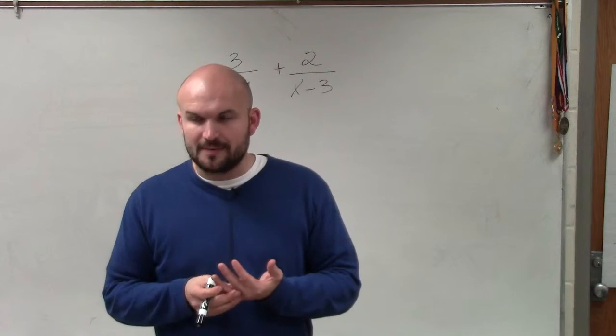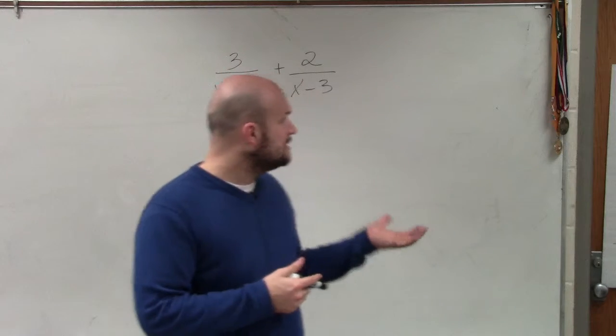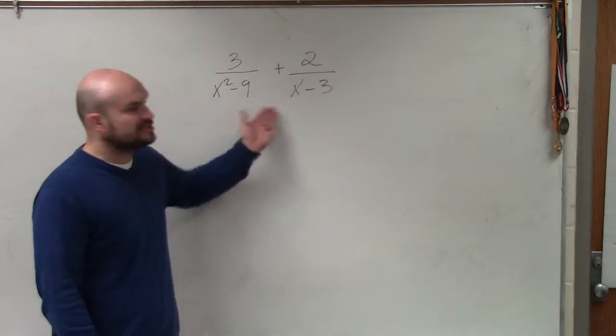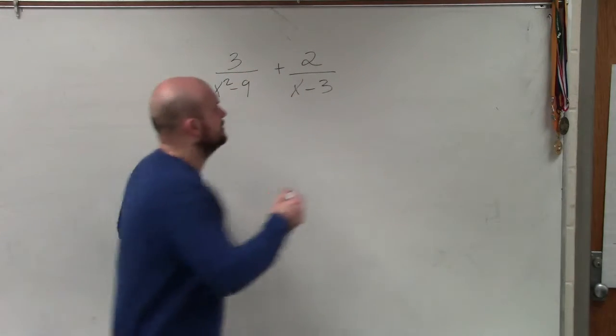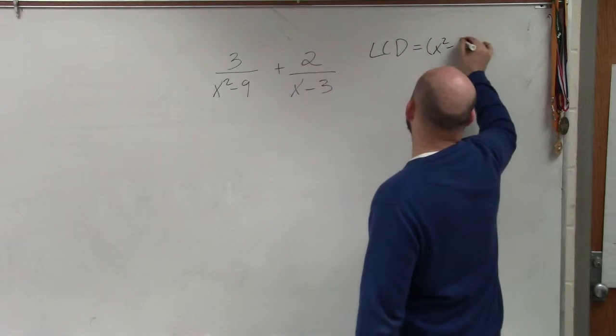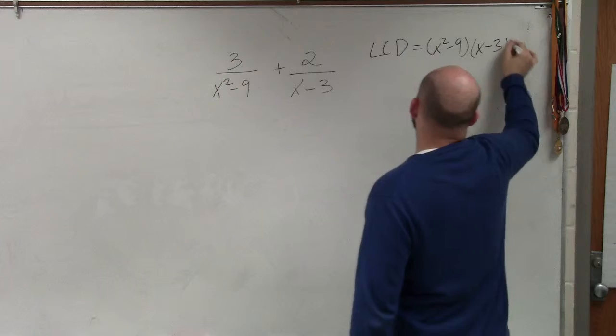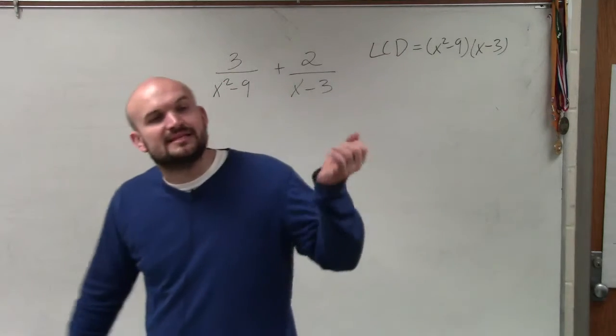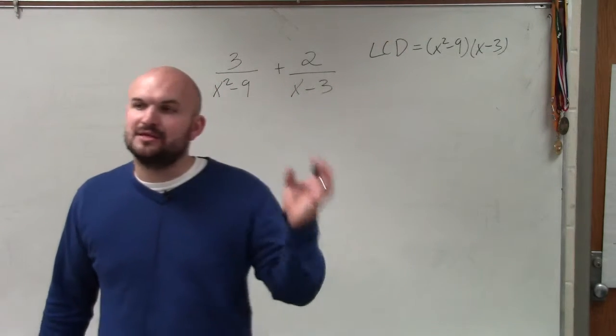When adding and subtracting rational expressions, the easiest thing to find the common denominator was just to multiply your two denominators. So therefore, I'd say my least common denominator is equal to x squared minus 9 times x minus 3. But that is not always going to be the least common denominator though, so you have to be a little bit careful.